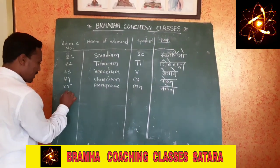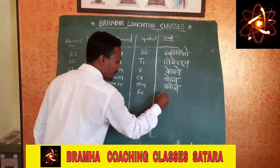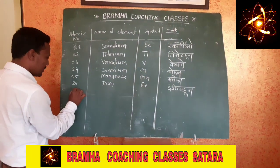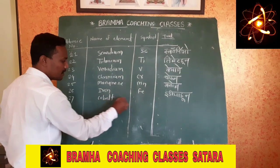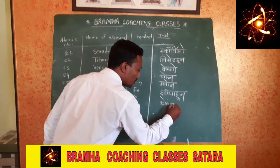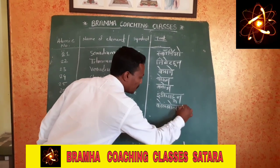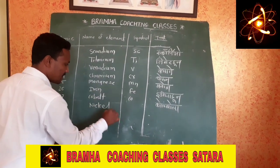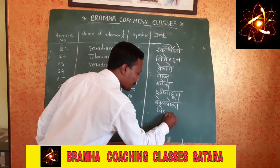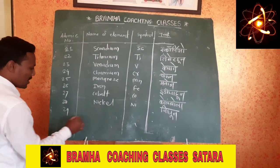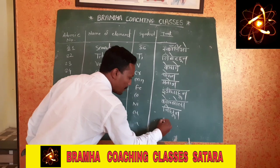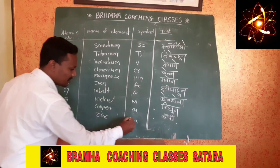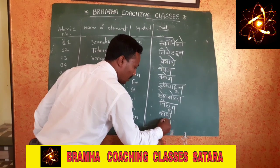Atomic number 26: Fe, Iron — mnemonic 'Indiabhum.' Note that Iron's name is from English but the symbol Fe comes from its Latin name Ferrum. Atomic number 27: Co, Cobalt — mnemonic 'Columbola.' Atomic number 28: Ni, Nickel — mnemonic 'Nihun.' Atomic number 29: Cu, Copper — mnemonic 'Copy.' Atomic number 30: Zn, Zinc — mnemonic 'Jali.'